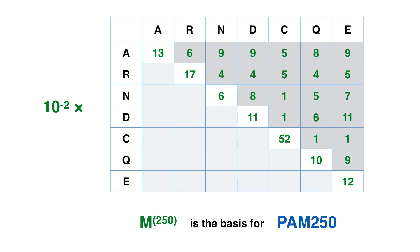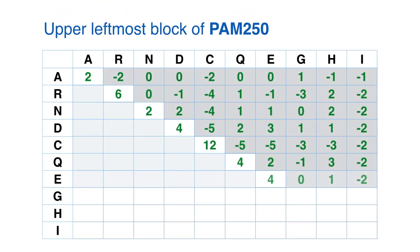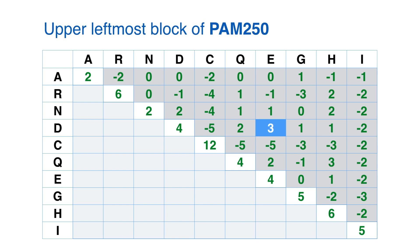This is the upper-leftmost block of PAM250. It is worth pointing out that unlike BLOSUM matrices, in PAM250 there are several off-diagonal positive entries. Some of them — such as the entry DE — indicate that the likelihood of substitution of D and E is even higher than that of A and N being conserved.